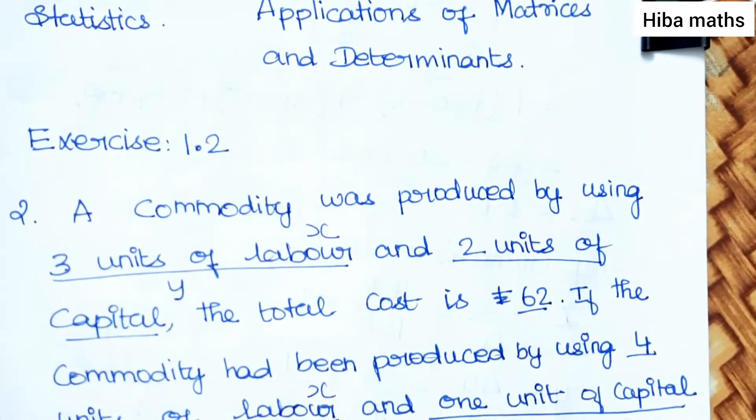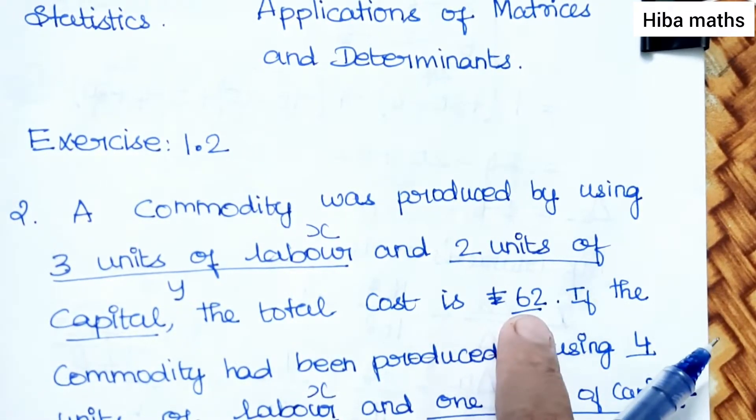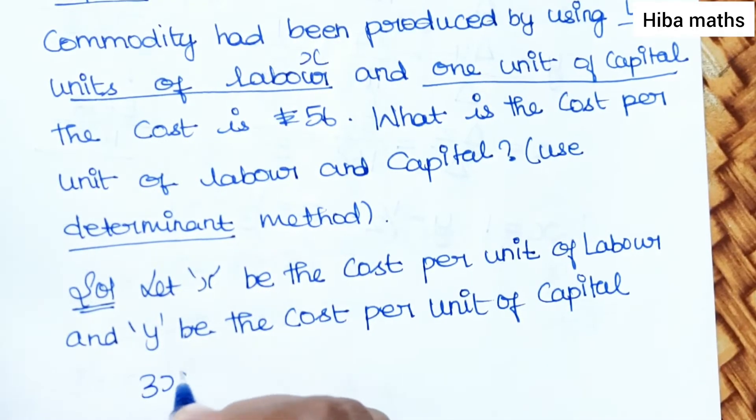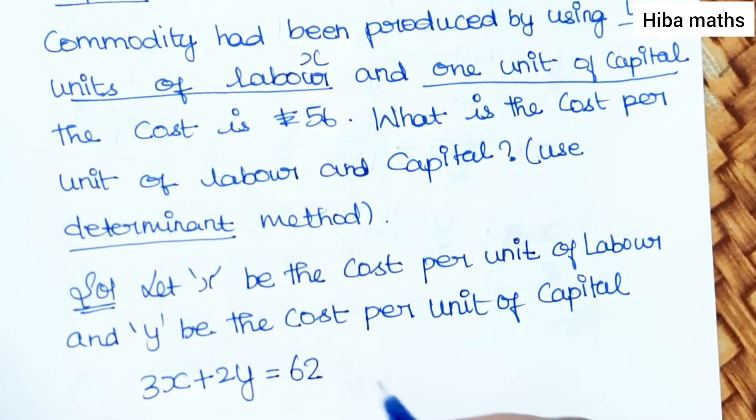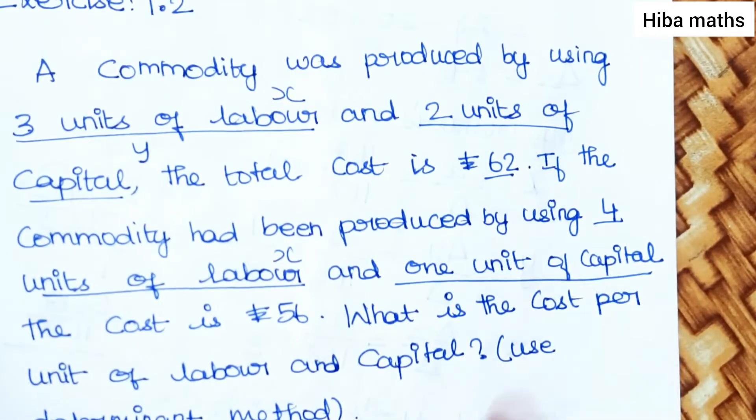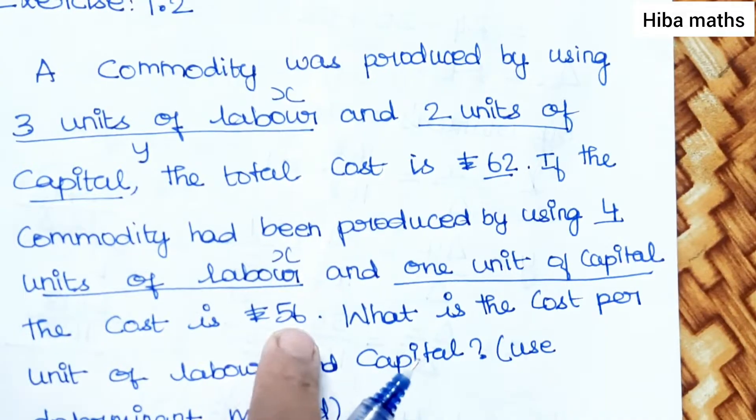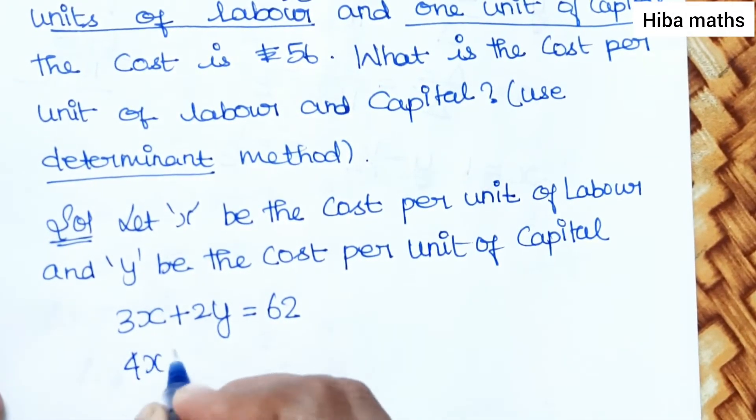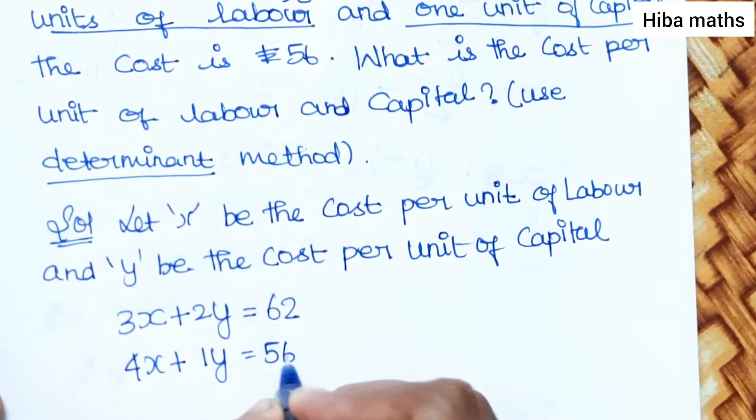From the question, 3 into x plus 2 into y is equal to 62. And 4 into x plus 1 into y is equal to 56.